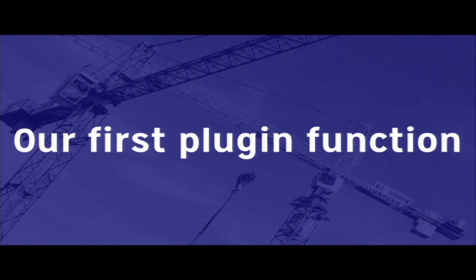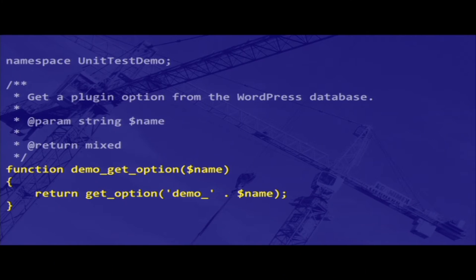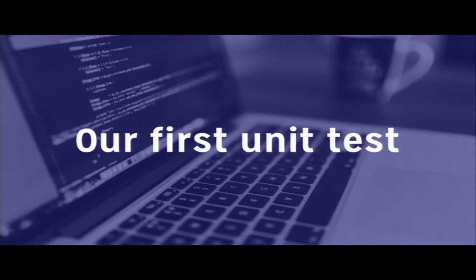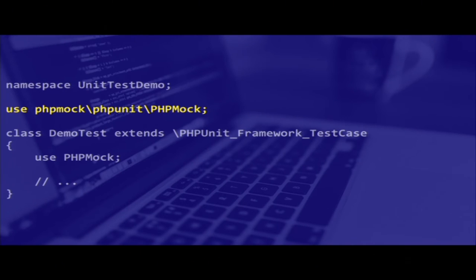What we're going to do is create our first plugin function. It's a pretty easy function — get_plugin_option — with our namespace, where we namespace our option because everybody knows you should namespace your options. We're going to test that to make sure our plugin correctly namespaces options when it fetches them from the WordPress database. This is what the unit test looks like right now. As you might have noticed, we're still using the same namespace as before — unit test demo. We're also going to import PHPMock, which is our mocking library for PHP functions. And then we have our demo test class, which is where we'll store our tests.